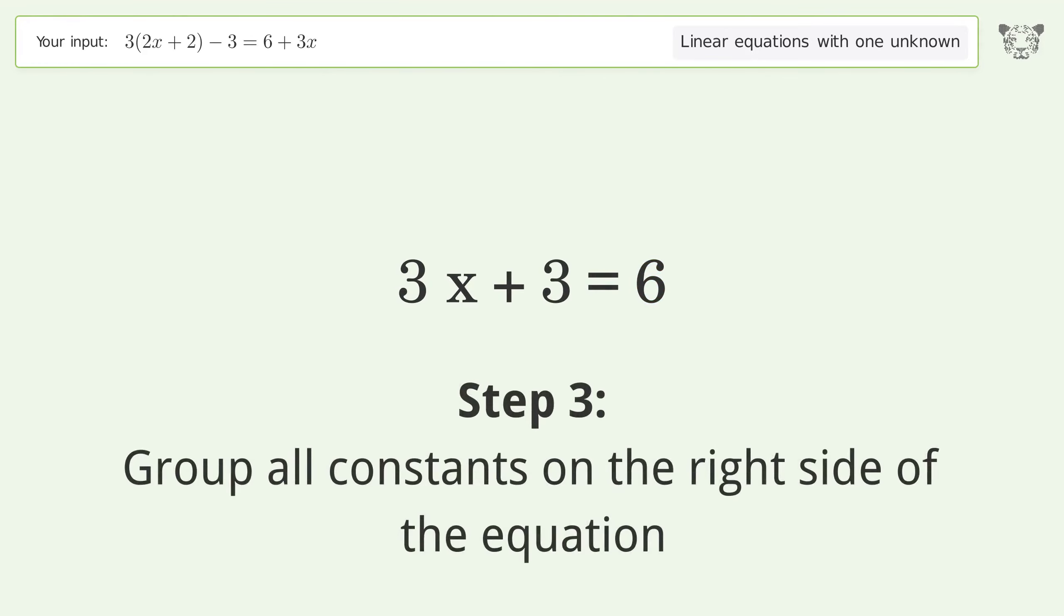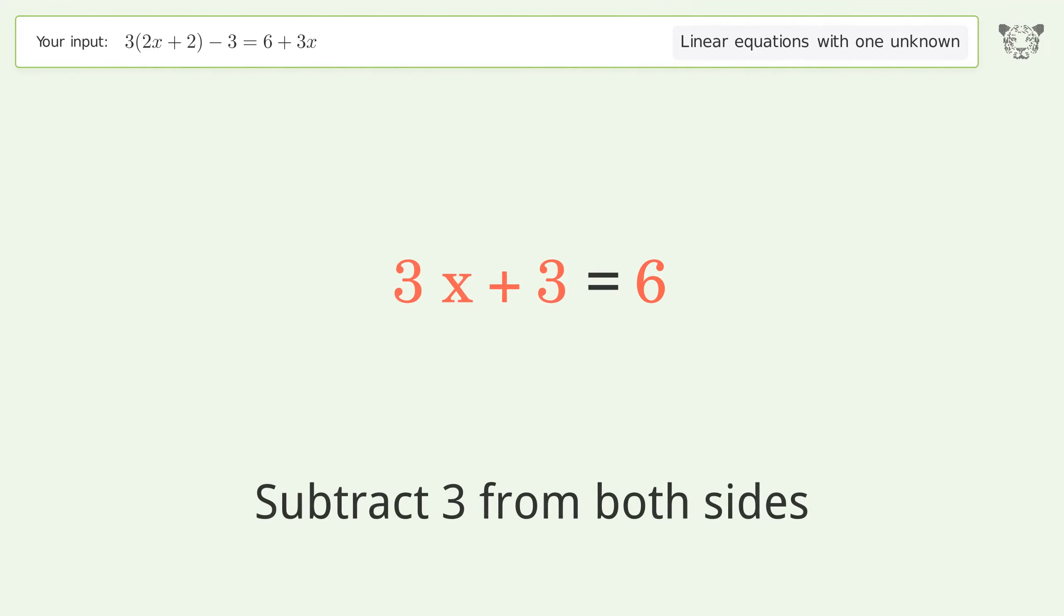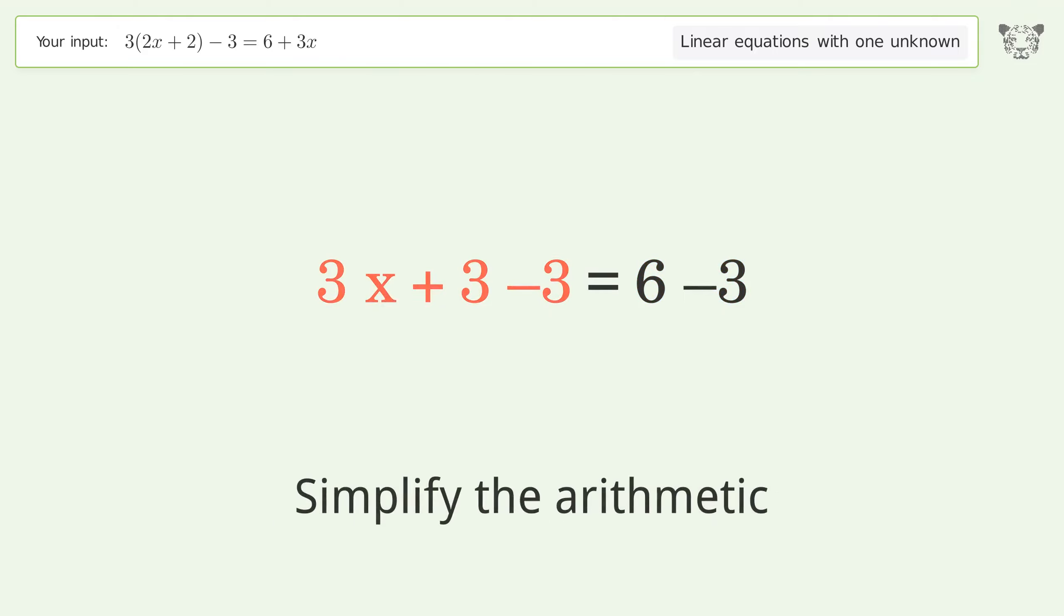Group all constants on the right side of the equation. Subtract 3 from both sides. Simplify the arithmetic.